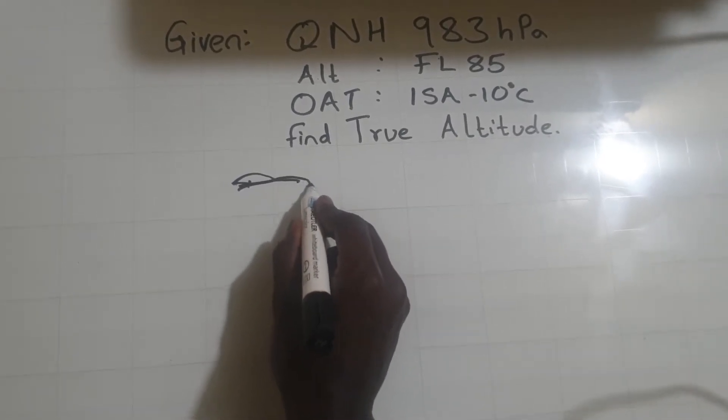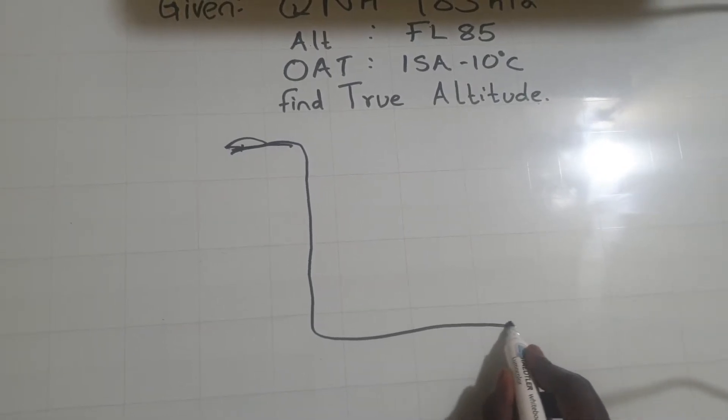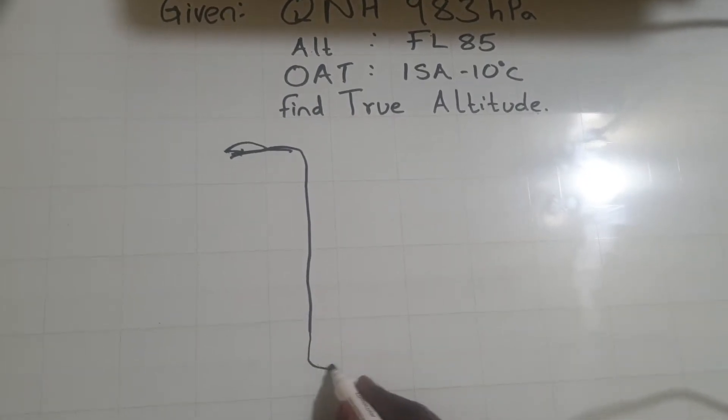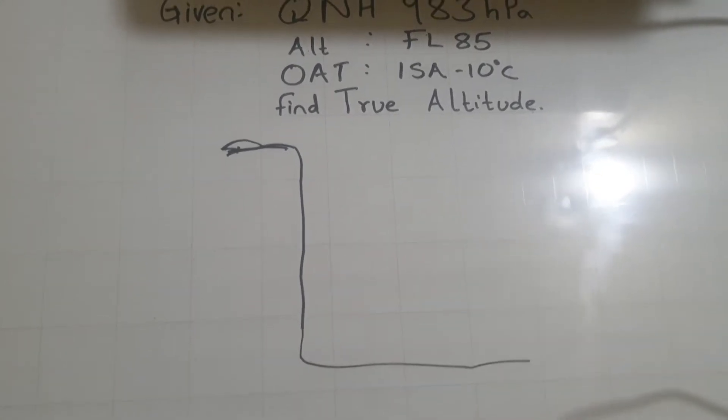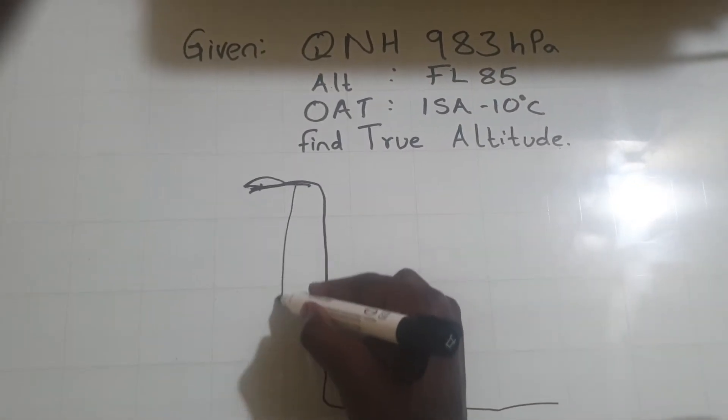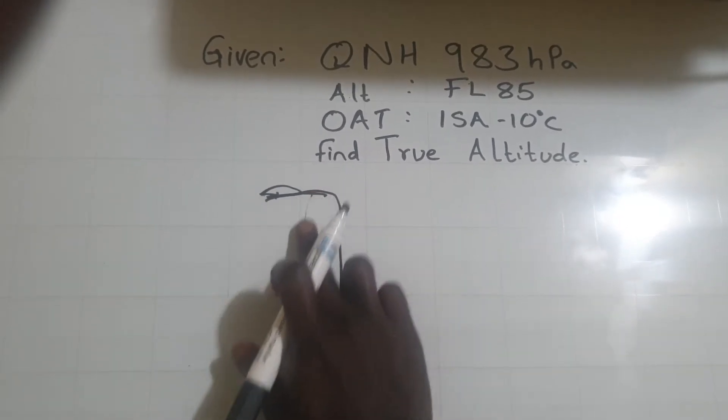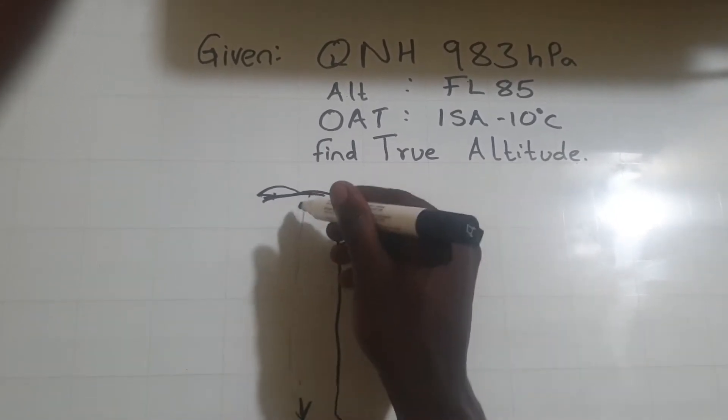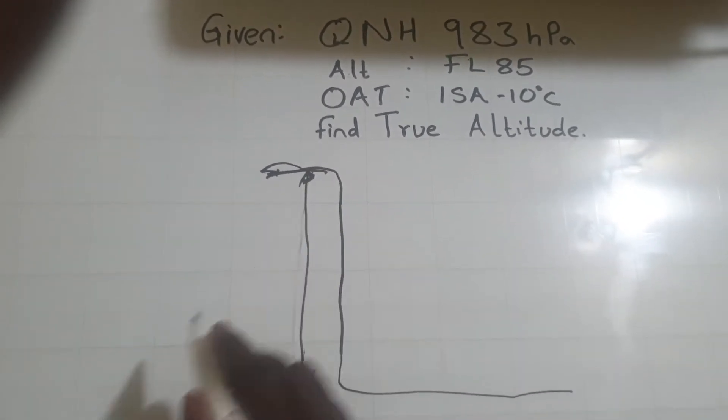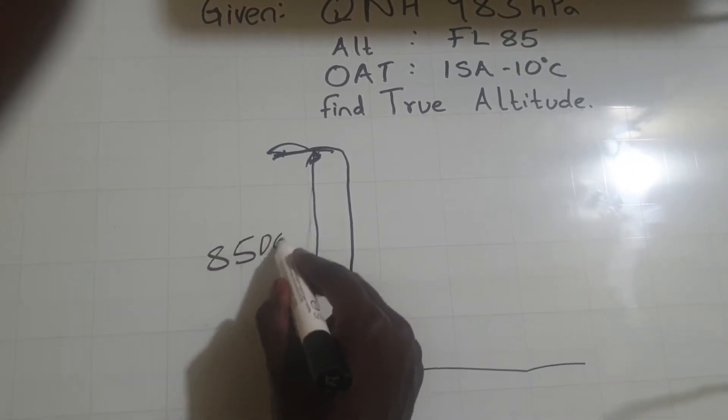So this level up to the datum, it can be anywhere. So I'm just looking at how it's showing. So this is from here where the aircraft is to here. This vertical distance is 8,500 feet.